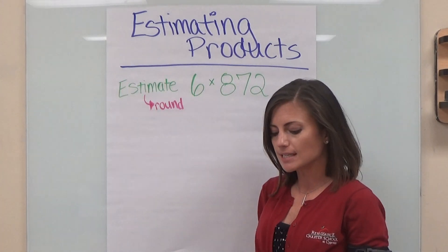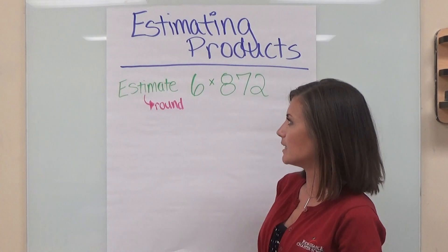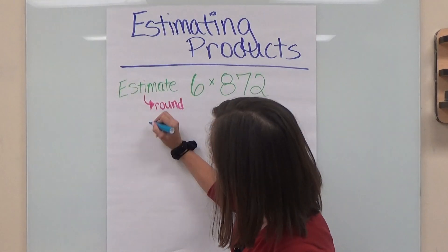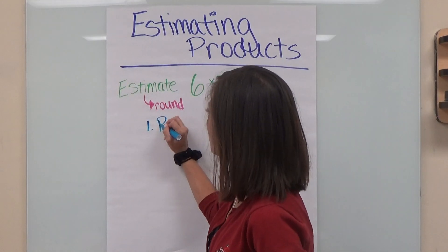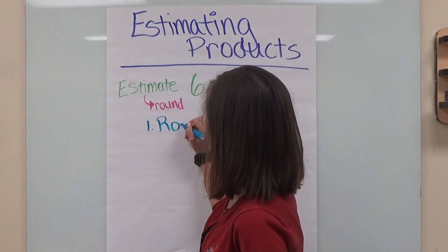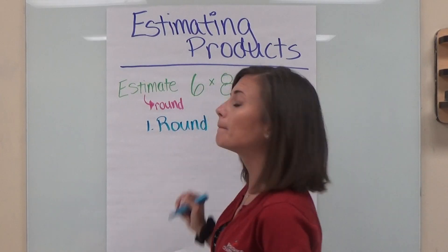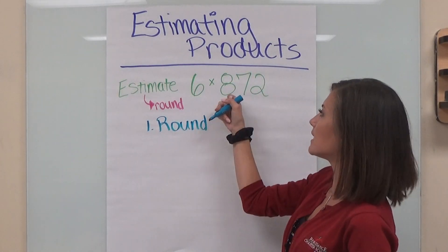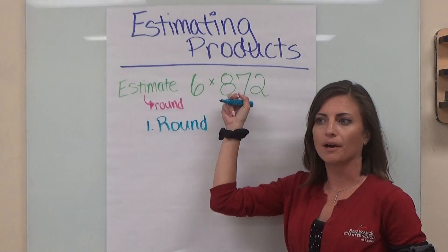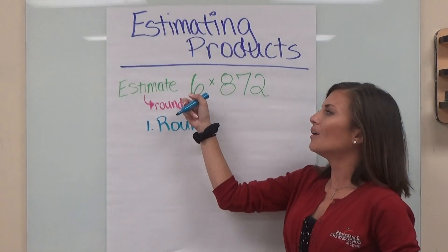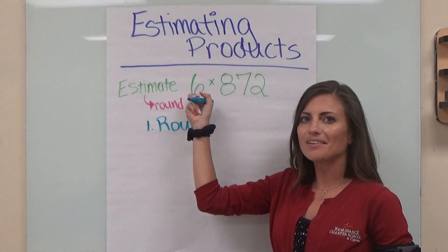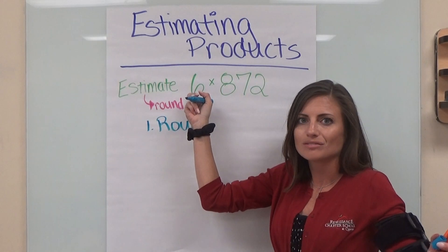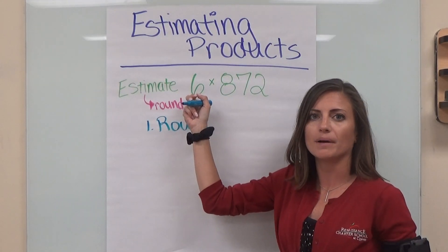So our first step when we are solving a problem like this — step number one — we are going to round our big number in the problem. In this case, 872 is our big number. We don't need to worry about rounding six because if we rounded it, it wouldn't change. It's already a single digit number.